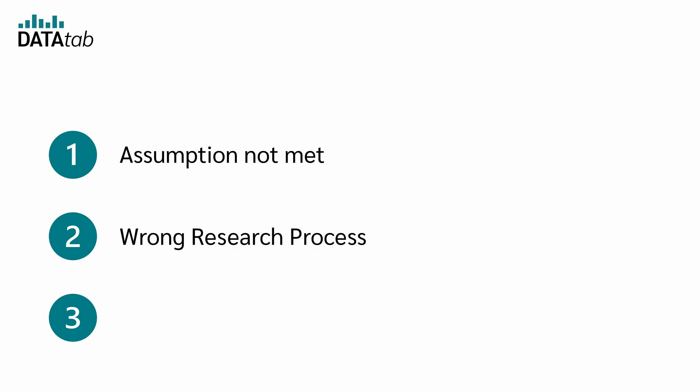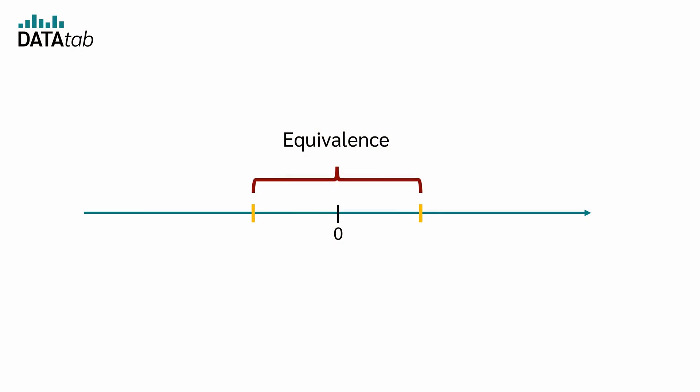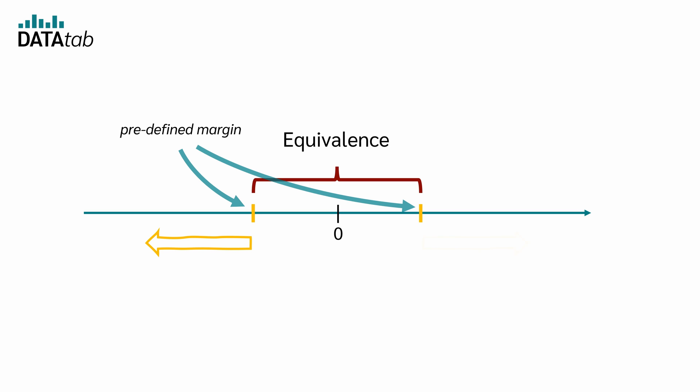What is the third case where a t-test should never be used? The third point is: never use a classical t-test when testing for equivalence or non-inferiority. Suppose you've developed a new drug that has fewer side effects than the standard treatment. Rather than simply determining whether there is a significant difference, your goal is to assess whether the two treatments produce statistically similar effects within a predefined margin of equivalence.